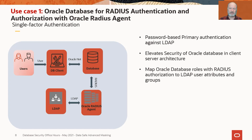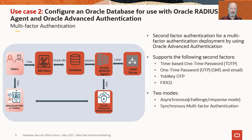The next use case for the Radius Agent is probably a little bit more obvious. We usually think of Radius in terms of multi-factor authentication, and that's exactly what the Radius Agent gives us. In addition to connecting to an LDAP server, the Radius Agent connects to the Oracle Advanced Authentication service, which allows you to bring in things like the Oracle Mobile Authenticator, Google Authenticator, one-time passwords sent over email or SMS, or something like a YubiKey token — multiple factors of authentication for your Oracle database.